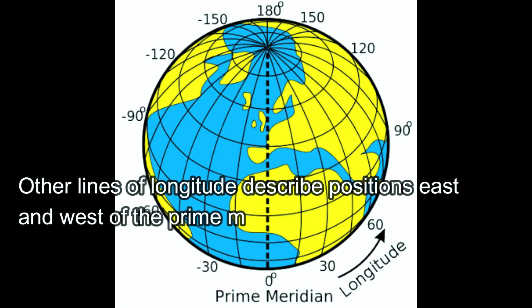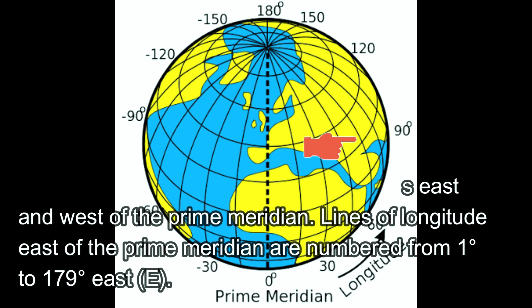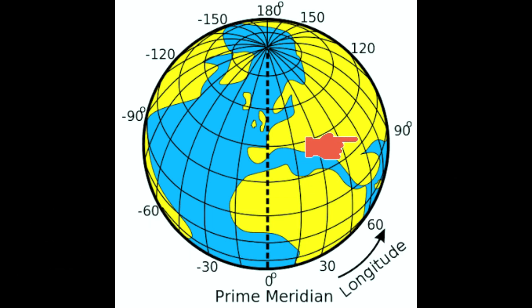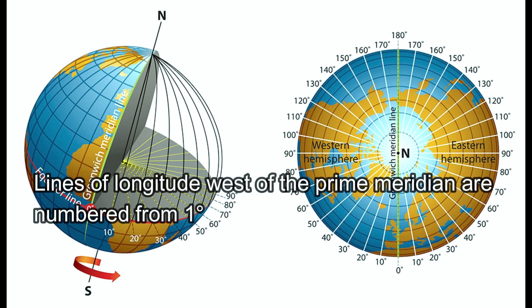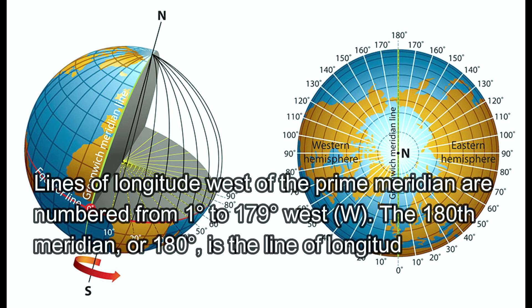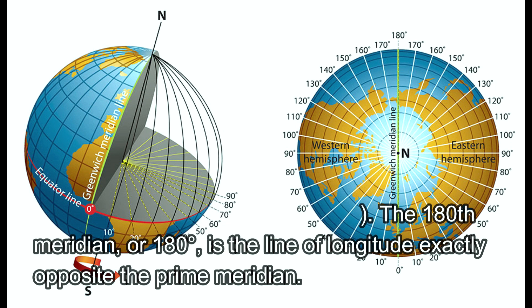Other lines of longitude describe the position east and west of the Prime Meridian. Lines of longitude east of the Prime Meridian are numbered from 1 degree to 170 degrees east, whereas lines of longitude west of the prime meridian are numbered from 1 to 179 degrees west. The 180th meridian is the line of longitude exactly opposite the prime meridian.